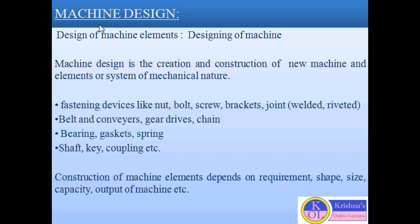What is machine? Machine is basically the combination of different links, elements, and mechanisms which are used to transfer some form of energy to mechanical energy, or it receives mechanical energy and power from other sources, and it transmits and modifies it for performing a particular task or to fulfill the objective.